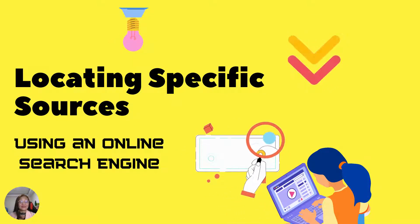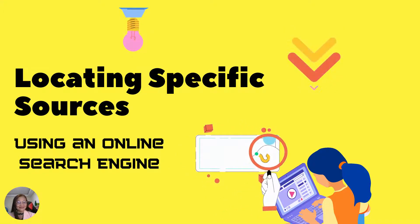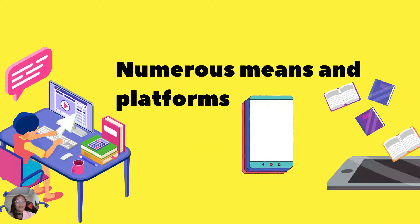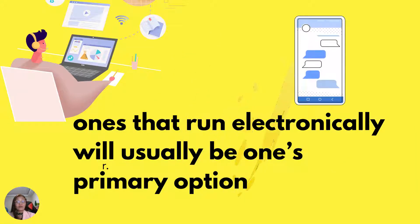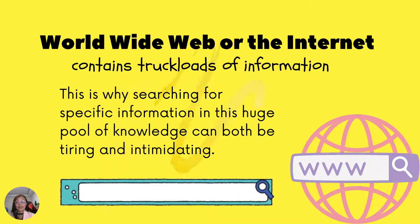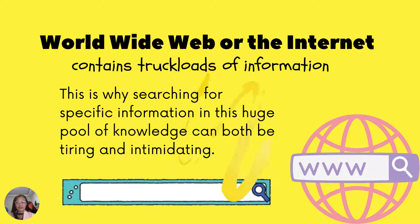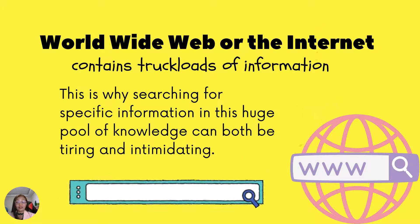This lesson deals with locating specific resources using an online search engine. While there are numerous means and platforms to locate information from available resources, resorting to ones that run electronically will usually be one's primary option. Technology has deeply changed the way we perceive library work and research. The World Wide Web or the Internet contains truckloads of information, which is why searching for specific information in this huge pool of knowledge can be both tiring and intimidating.